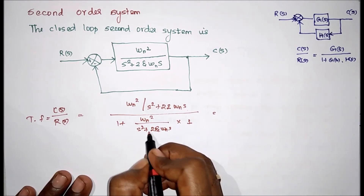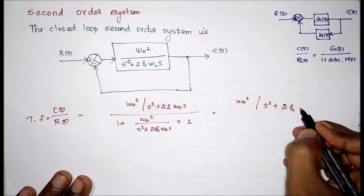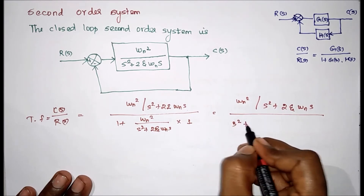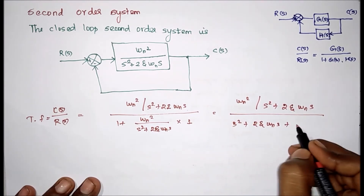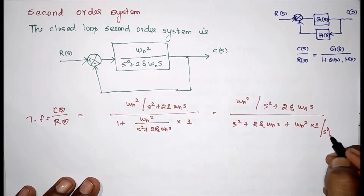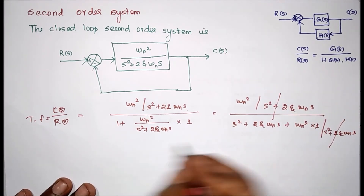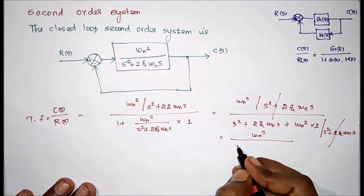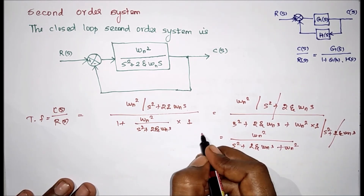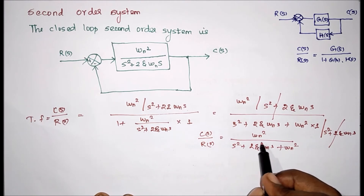Now we have to rearrange this by taking the LCM. So: ωn² divided by s² plus 2ζωn·s, divided by — taking LCM — s² plus 2ζωn·s plus ωn², all divided by s² plus 2ζωn·s. This part and this part cancel each other, and finally we have ωn² divided by s² plus 2ζωn·s plus ωn². So C(s) divided by R(s) — this is the transfer function of the second-order closed-loop system.